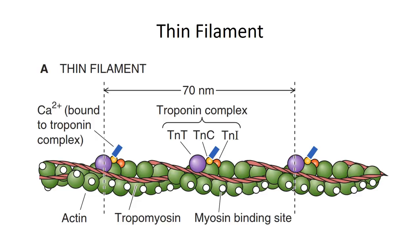Also associated with the thin filament are the troponin-tropomyosin proteins, which are critical in initiating and terminating muscle contractions. Tropomyosin is a two-stranded coiled-coil protein that blocks the myosin binding site in the relaxed state, preventing actin and myosin from interacting. The troponin protein complex acts like a hinge, with troponin I binding to the actin complex and troponin T to the tropomyosin complex. Linking the two together is troponin C, which also binds to calcium released from the sarcoplasmic reticulum. When calcium is present, it reversibly binds to troponin C, causing a conformational change that shifts tropomyosin and exposes the myosin binding site on actin — initiating muscle contraction. When the muscle relaxes, calcium is removed from troponin C, and tropomyosin returns to cover the myosin binding sites.